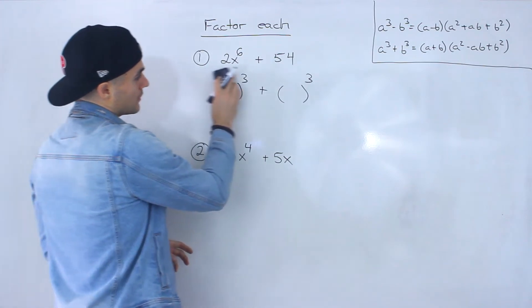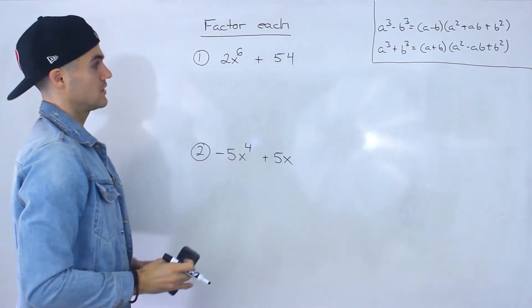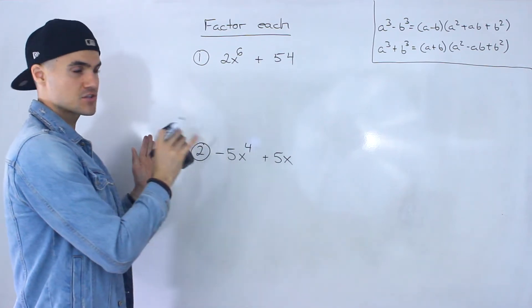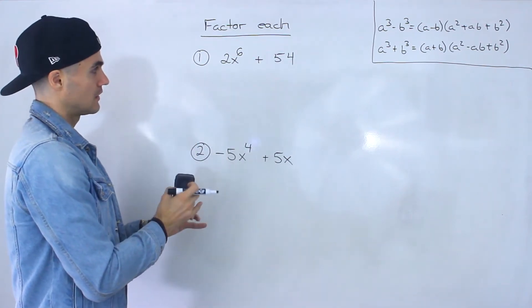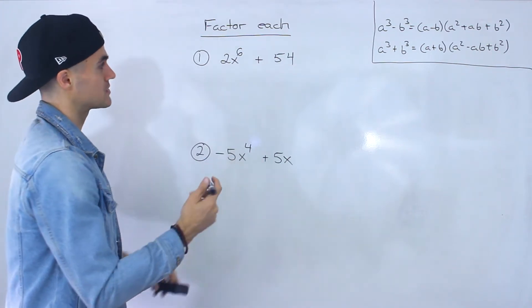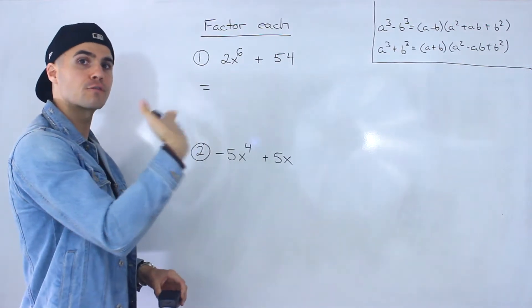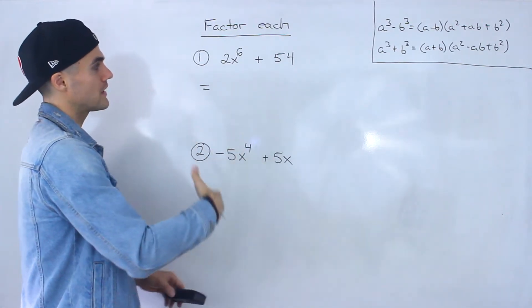So what you always want to check with expressions that you're given that you got to factor is if you can factor something out initially. And notice that for both of these you can factor something out initially. That's why I wanted to bring up these examples because they come up all the time. So that's always the first thing you look for.